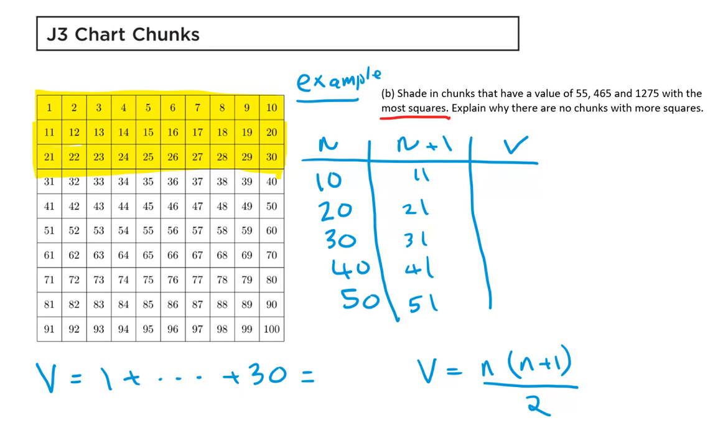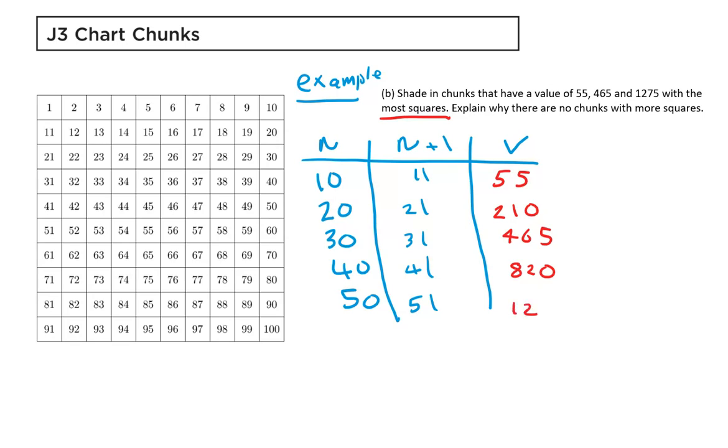So hopefully you've done that now. And the table hopefully will reveal some of the answers. I'm going to do the answers in red. So you should have got 55, which we did in the first one, 210, 465, 820, and 1275.